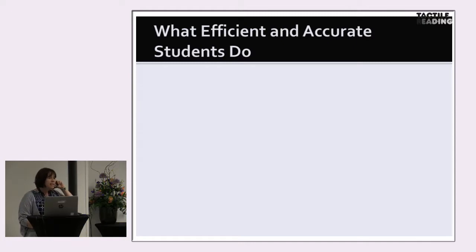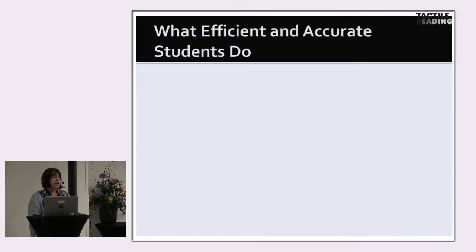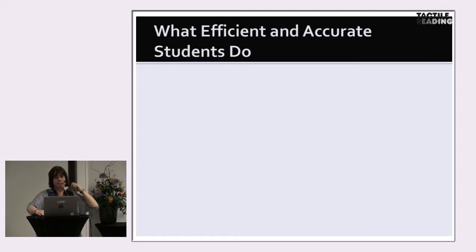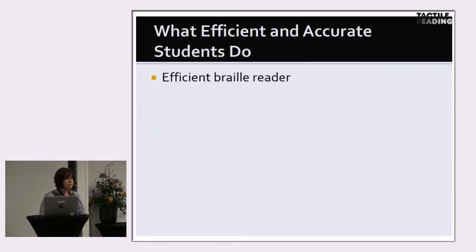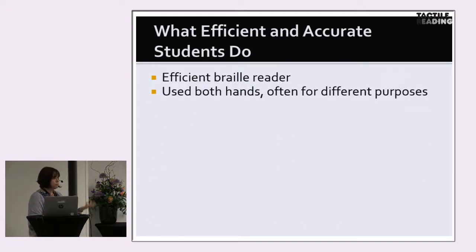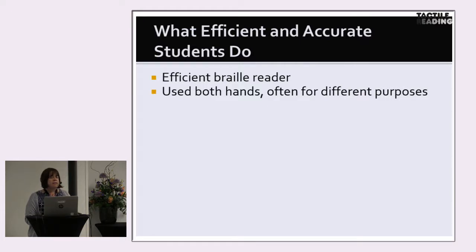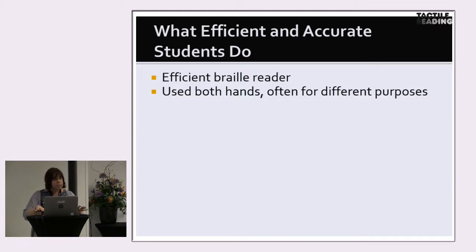Based on these findings, I looked more closely at the videos of the most efficient tactile graphics users — those who got the most correct and were quickest — to see what patterns emerged compared to students who struggled more. Efficient students were efficient braille readers: they used both hands for braille reading and were contracted braille readers. They also used both hands when exploring graphics, often using each hand for different purposes depending on the type of graphic. Less successful students sometimes approached the graphic as if reading braille, going left to right regardless of what the graphic was. More efficient students would do a quick scan, identify it as a bar graph, and then separate their hands to do different tasks.